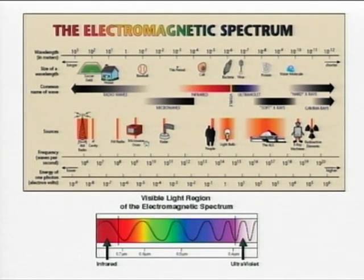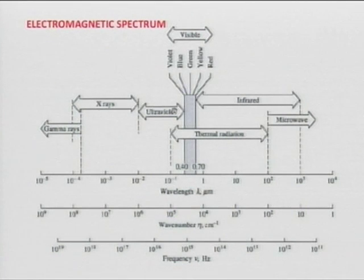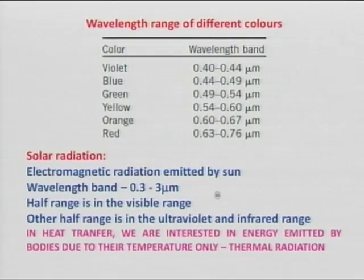That is about the electromagnetic spectrum. A portion of ultraviolet and a portion of infrared is the one which contributes thermal radiation — by virtue of temperature, they are emitting energy. We will appreciate this when we plot emissive power versus wavelength for different temperatures; you will see that only within this wavelength band is emissive power contributed because of temperature. That is why we call it thermal radiation.